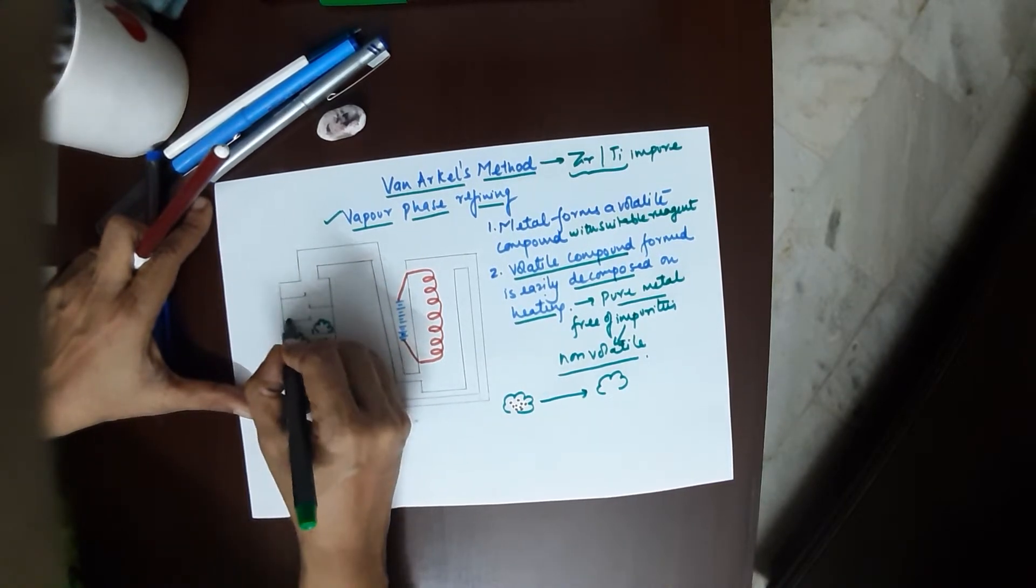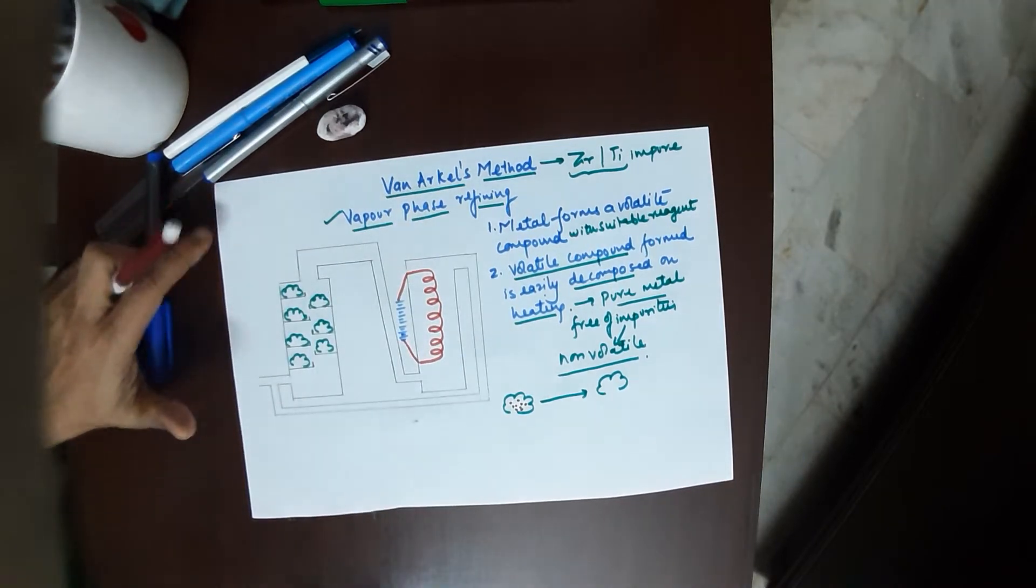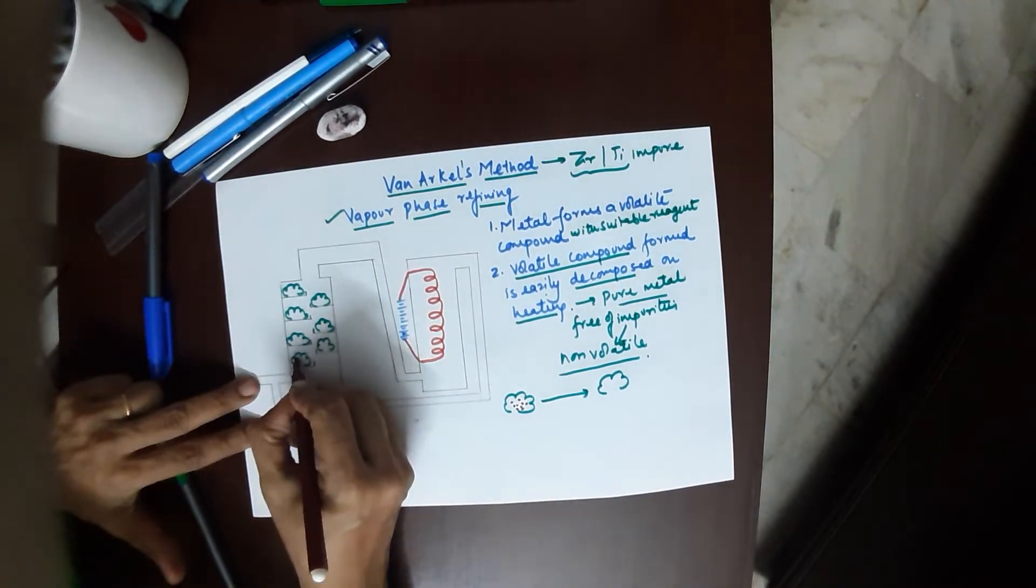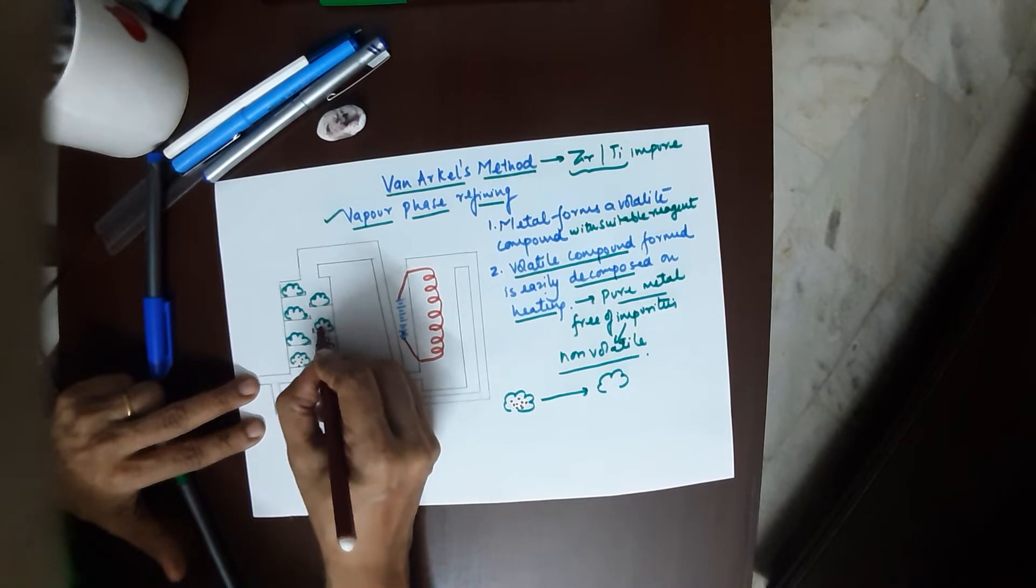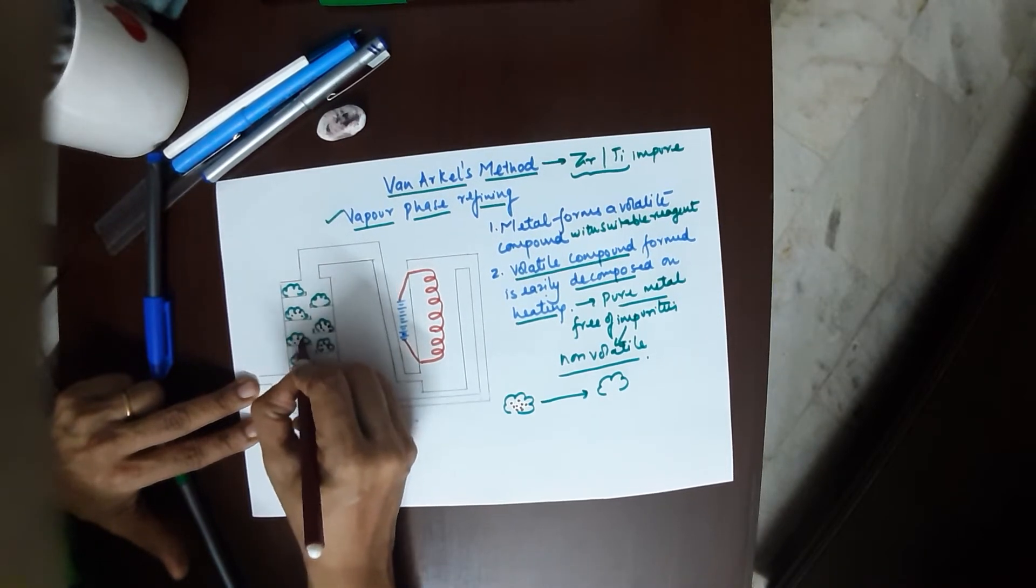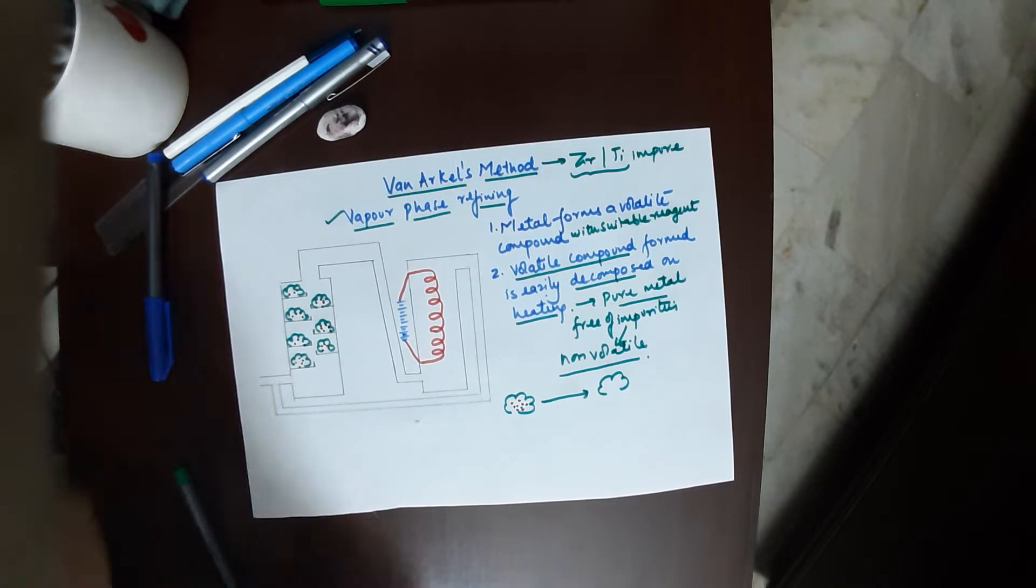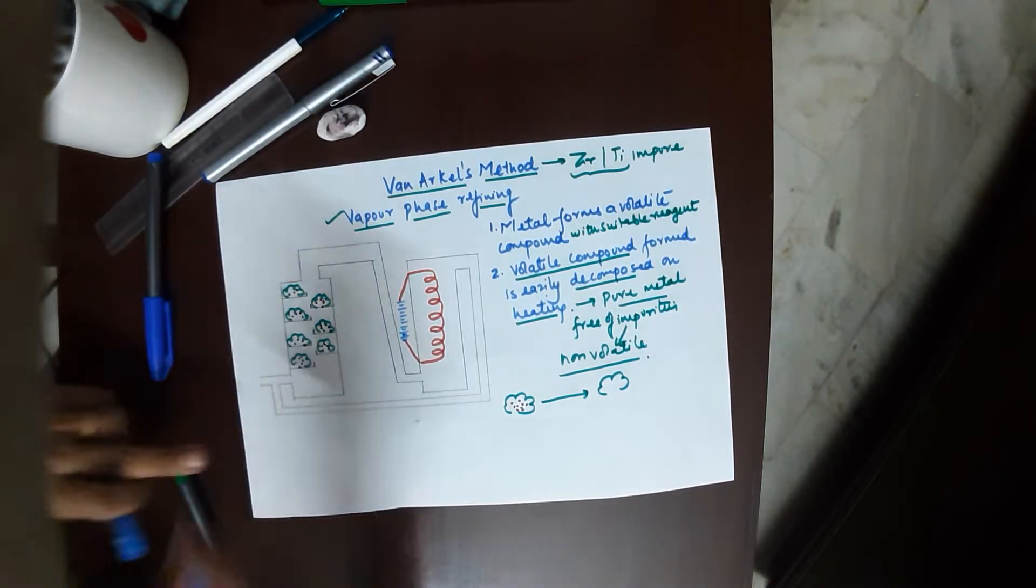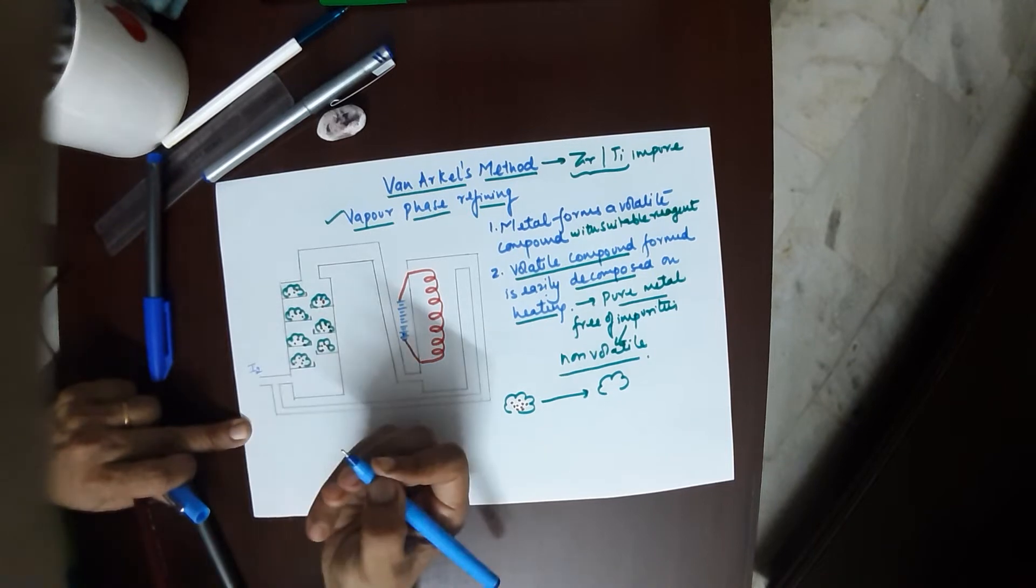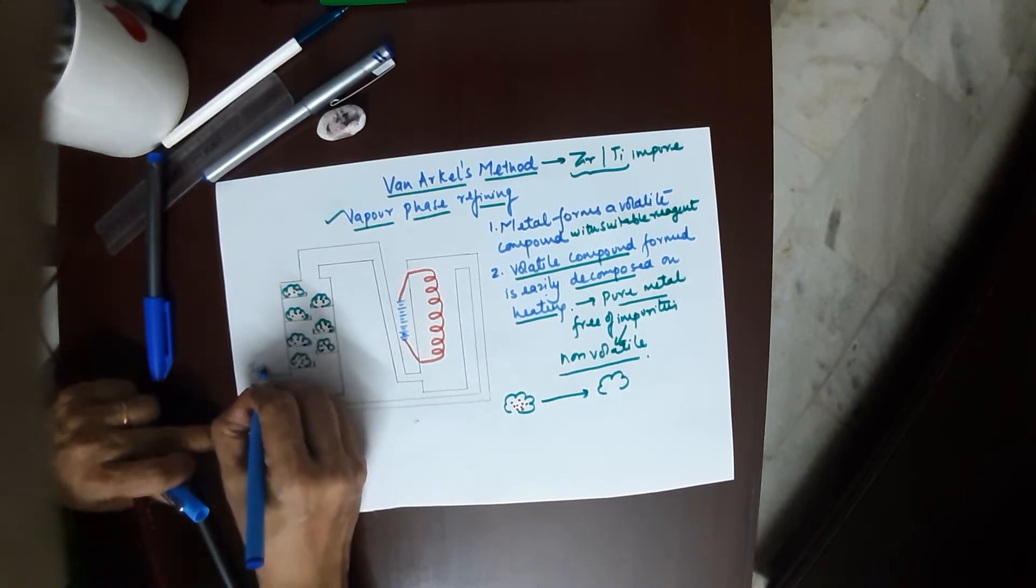In the first chamber, you have your impure zirconium or titanium. The reactions for both are exactly the same because the valency of zirconium and titanium both is 4. You have your impure zirconium in the first chamber and you treat it with a suitable reagent.